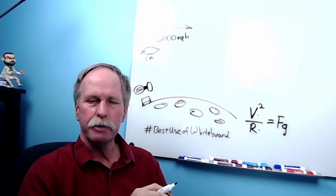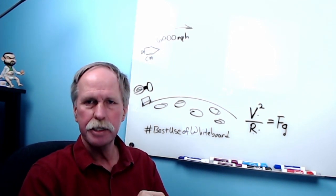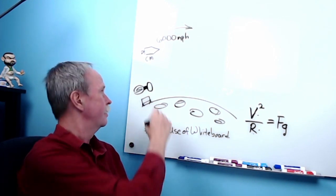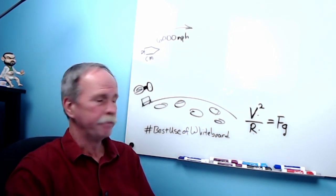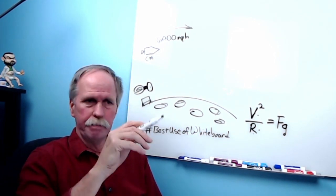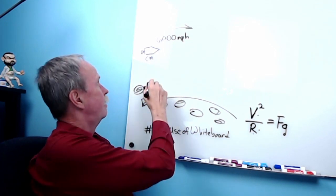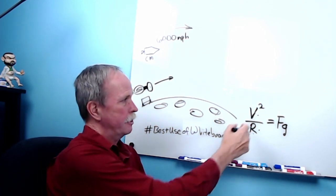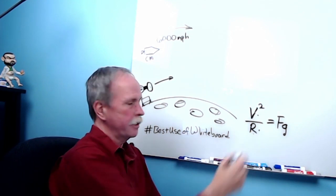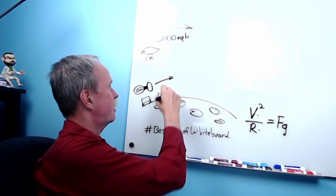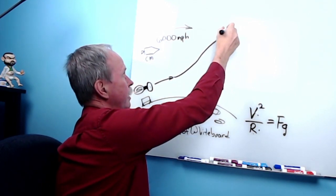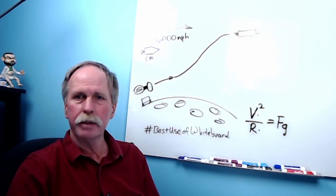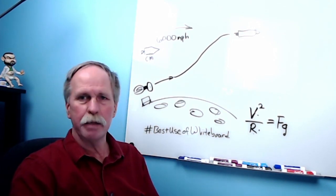When Neil Armstrong and Buzz Aldrin were done, they blasted off the moon. They left the descent module on the moon and took off in the ascent module, which had a little rocket motor on it. It went up and then went off to the side, constantly accelerating. As it increased its velocity, it increased the radius from the center of the moon, and as a result it started climbing. Eventually it caught up with the command module in orbit, they docked, transferred people, and off they went.